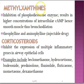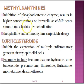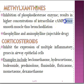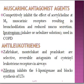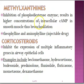The next class is the methylxanthines. These cause inhibition of phosphodiesterase enzymes, which results in a high concentration of intracellular cAMP in smooth muscle, leading to bronchodilation. Examples include theophylline, which is available as tablets, and aminophylline.